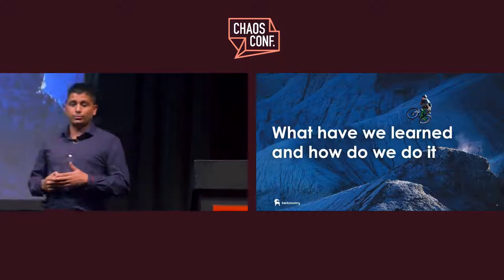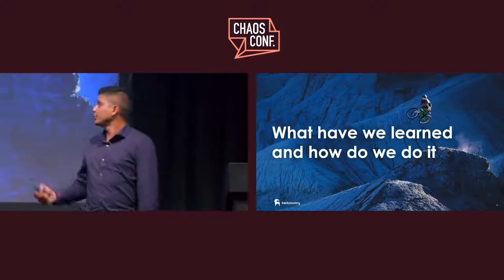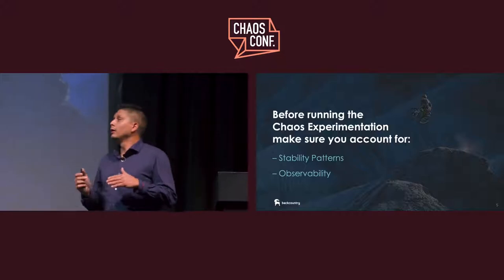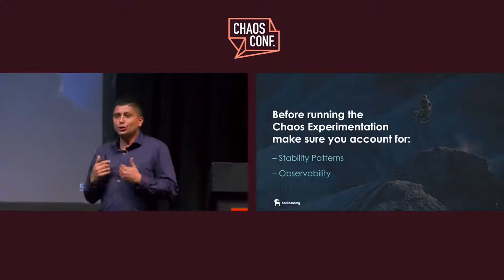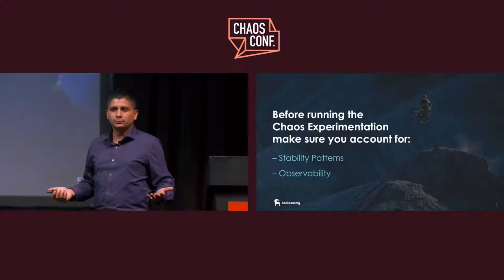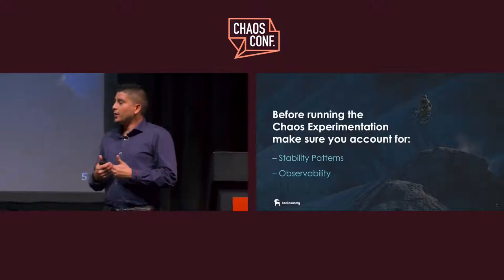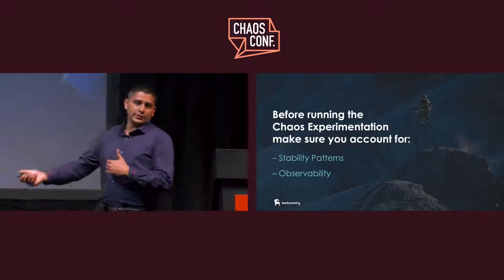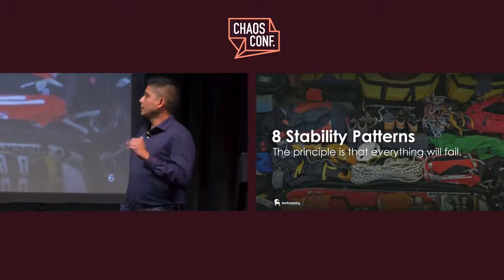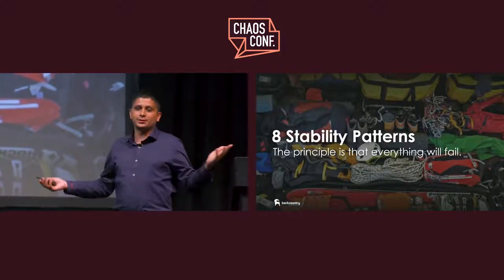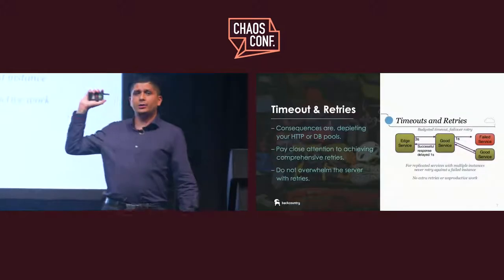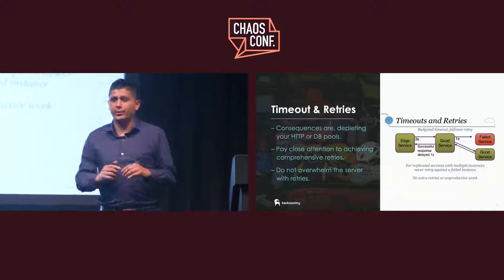Before running any chaos experimentation, you need to understand the stability patterns and observability, because that's how you'll understand what's going on and fix problems you find. Eight stability patterns. The principle is: everything will fail. The first pattern is timeouts and retries as a pair.